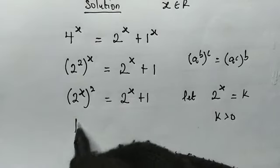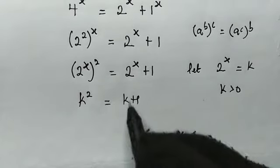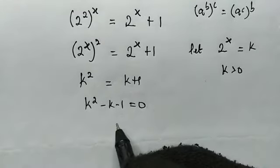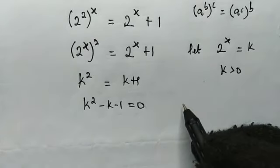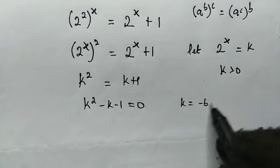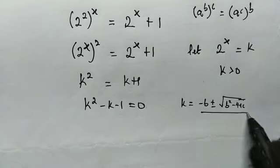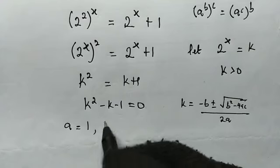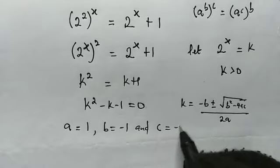So here, (2^x)^2 will become k^2, which equals k plus 1. Moving this to the left we get k^2 - k - 1 = 0. Now make use of the general quadratic formula. Remember k will be equal to (-b ± √(b^2 - 4ac))/2a. And here a equals the coefficient of the leading term which is 1, b is the coefficient of k which is -1, and c equals -1.